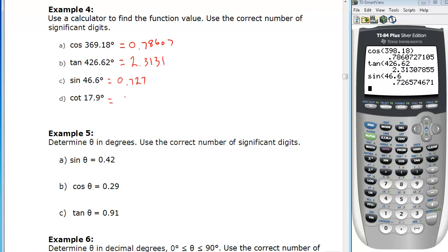Cotangent, well, we don't have a cotan button, so we have to change that to 1 over the tan of 17.9 degrees. We can do that on the calculator: 1 divided by the tan of 17.9, and that gives us 3.10 when rounded correctly to three significant digits. So that's example four.